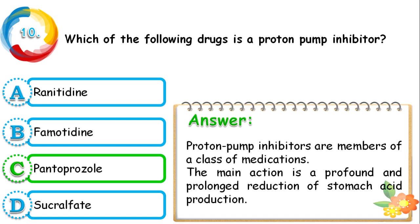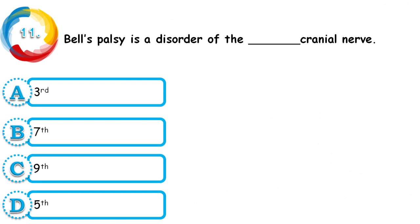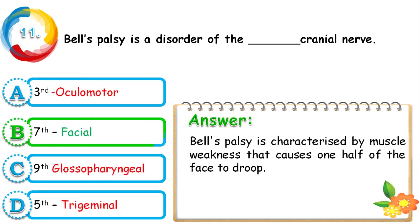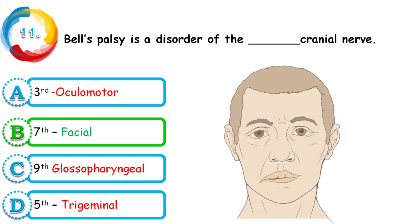Question 11: Bell's palsy is a disorder of which cranial nerve — 3rd, 7th, 9th, or 5th? The correct answer is the 7th cranial nerve, the facial nerve. Bell's palsy is mainly characterized by muscle weakness that causes one half of the face to droop. On the image you can see one side of the face dropping.